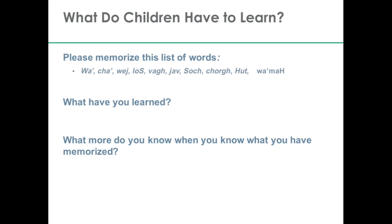Supposedly this is how Klingons count and these are the number words they use. If you memorize this list without knowing that, you really don't know what to do with it or how it can be used. If I tell you that it's a list of counting words, then you, as adults, know what to do with the list now. But try to imagine young children who are learning for the first time the list of counting words in English — one, two, three, four, five, six, seven, eight, nine, ten. That's obviously a challenging list to learn.